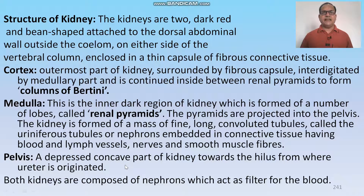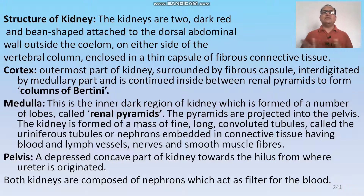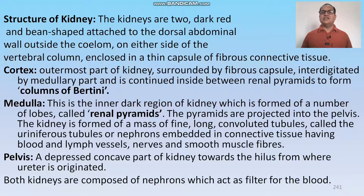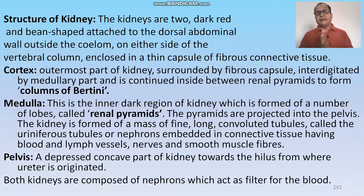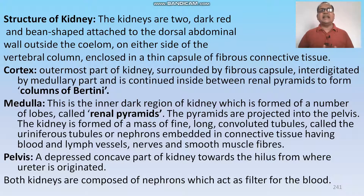The structure of the kidney: kidneys are two in number, dark and bean-shaped, attached to the dorsal abdominal wall outside the coelom, on either side of the vertebral column, and enclosed in a thin capsule of fibrous connective tissue. The cortex is the outermost part of the kidney, surrounded by the fibrous capsule and interdigitated by the medullary part, continued inside between the renal pyramids to form columns of Bertini.